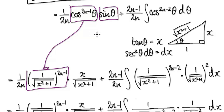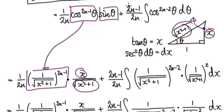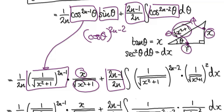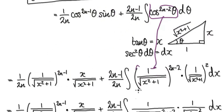Now translate the sin term — sin would be opposite over hypotenuse. This is your constant. And then visualize this as cos theta to the power of 2n minus 2; cos theta would be adjacent over hypotenuse to the power of 2n minus 2. So this block here becomes this thing here.